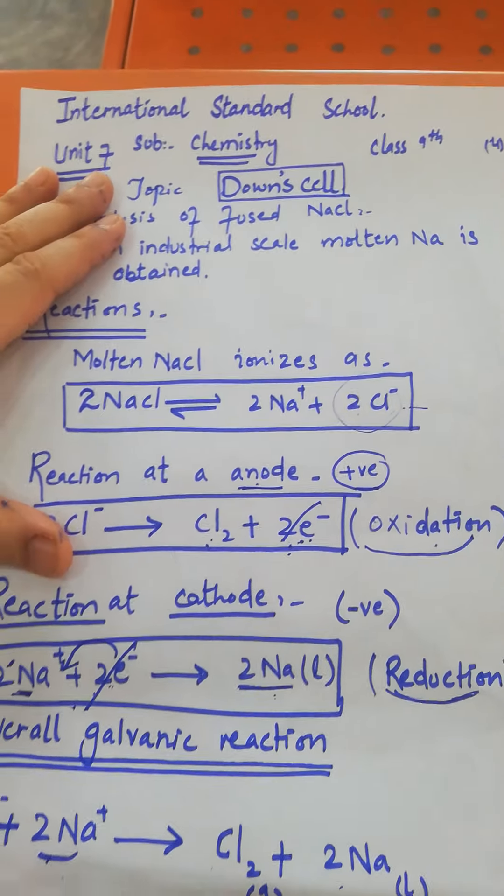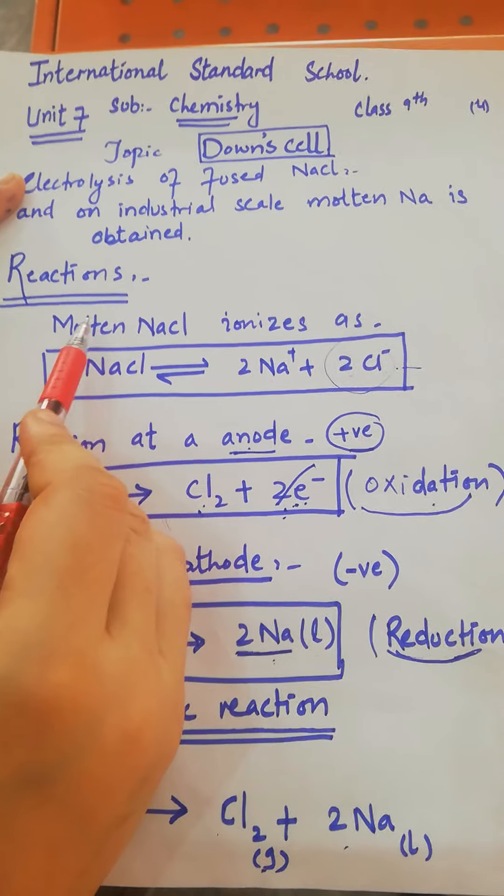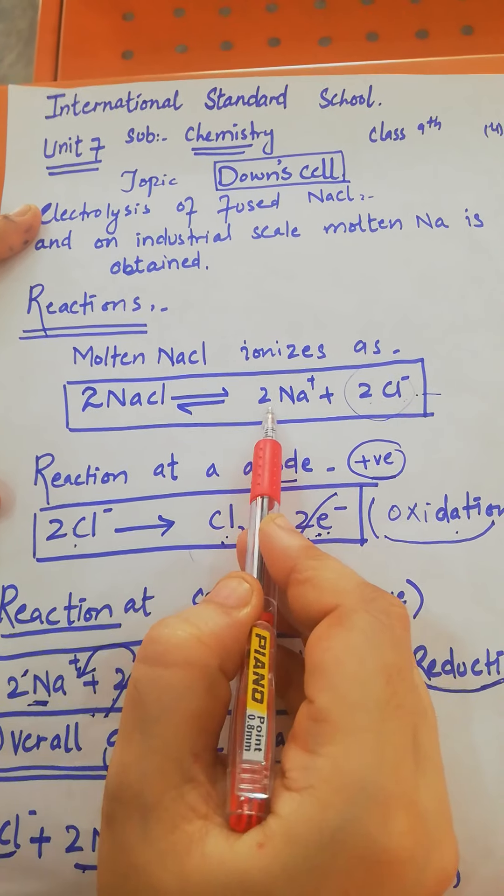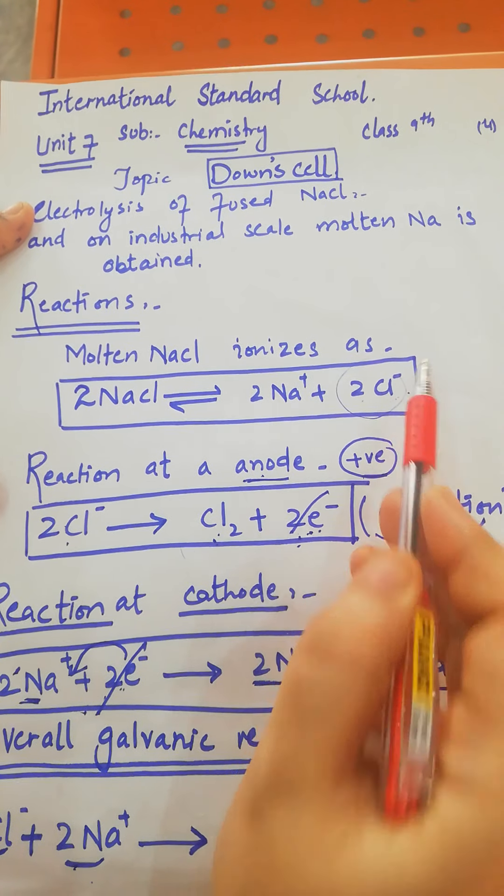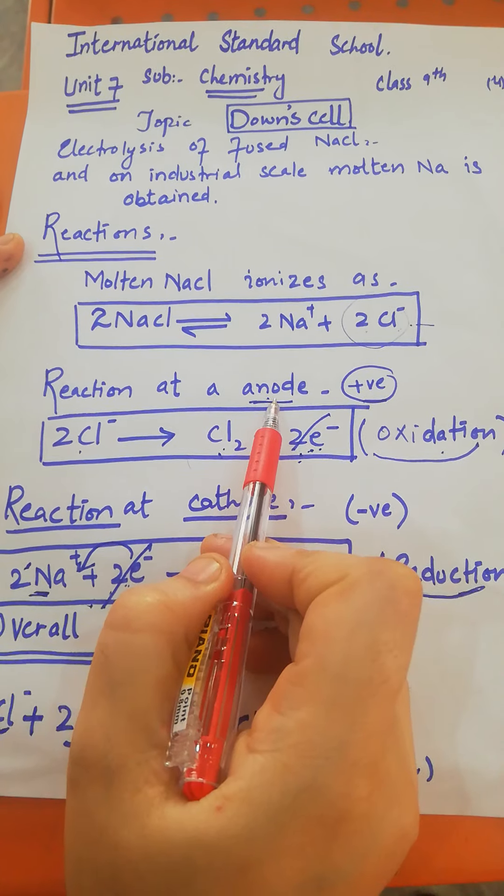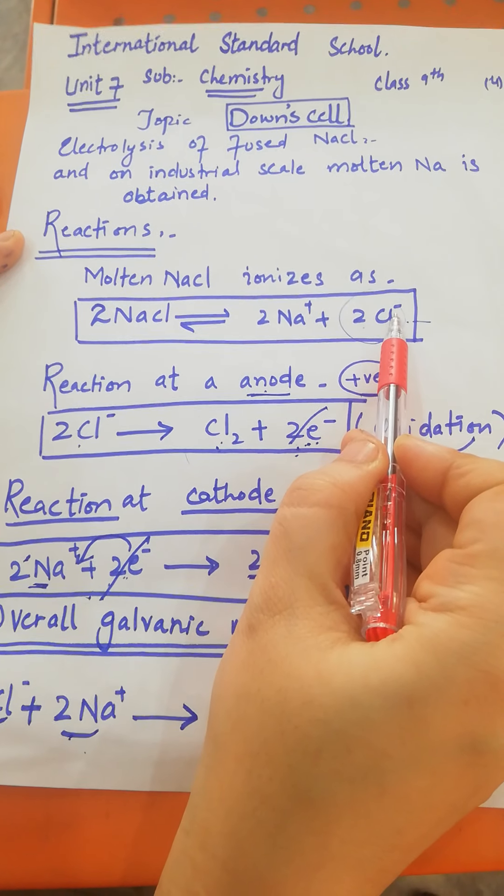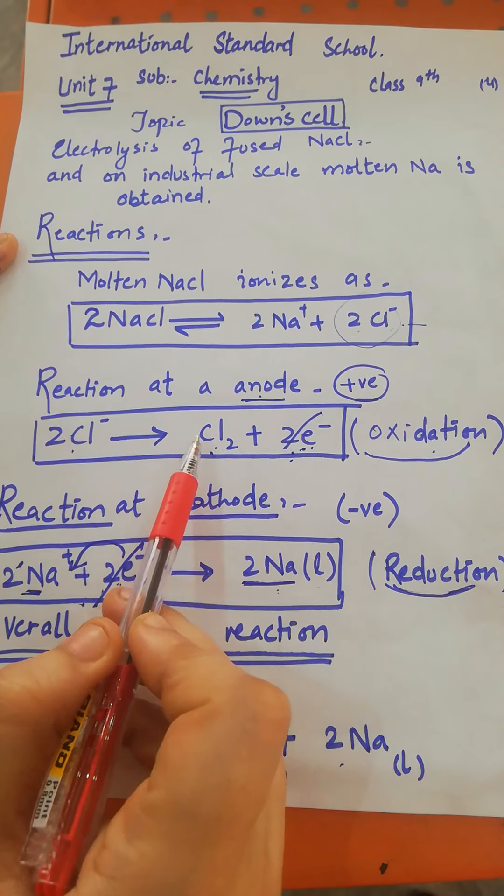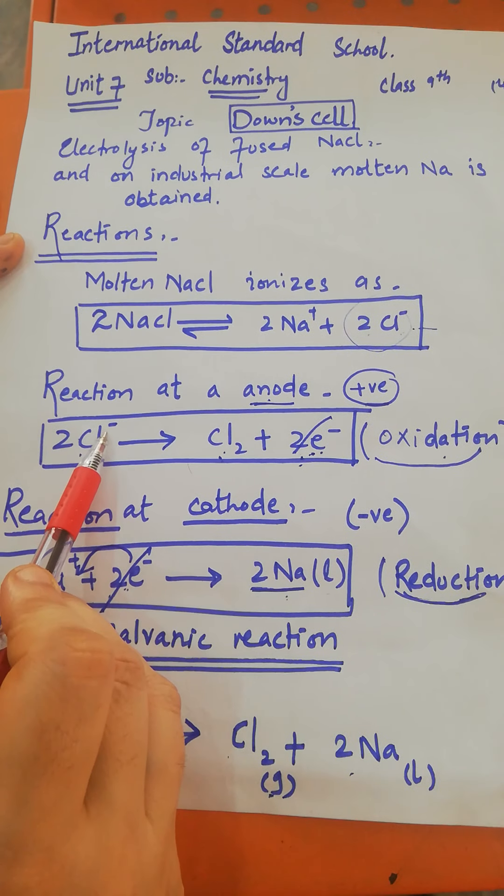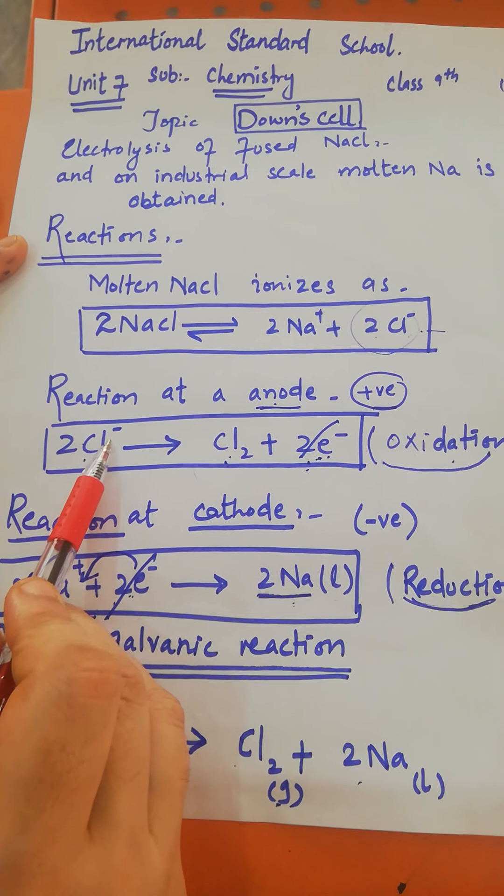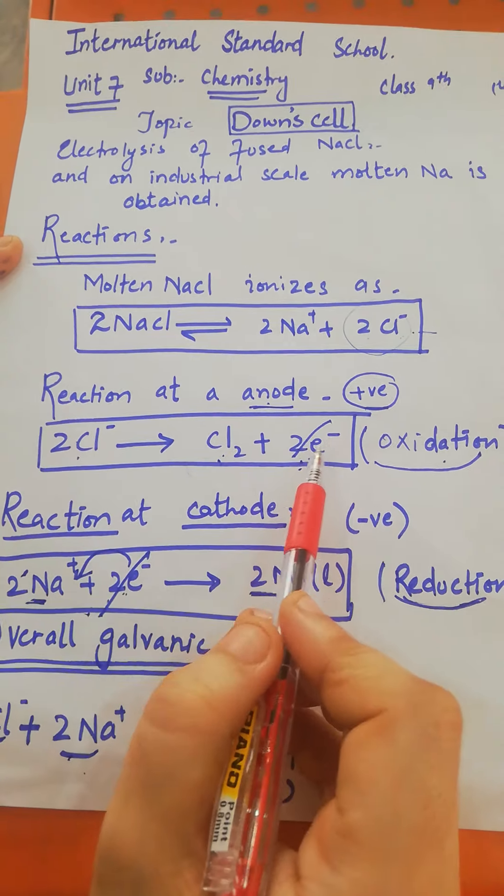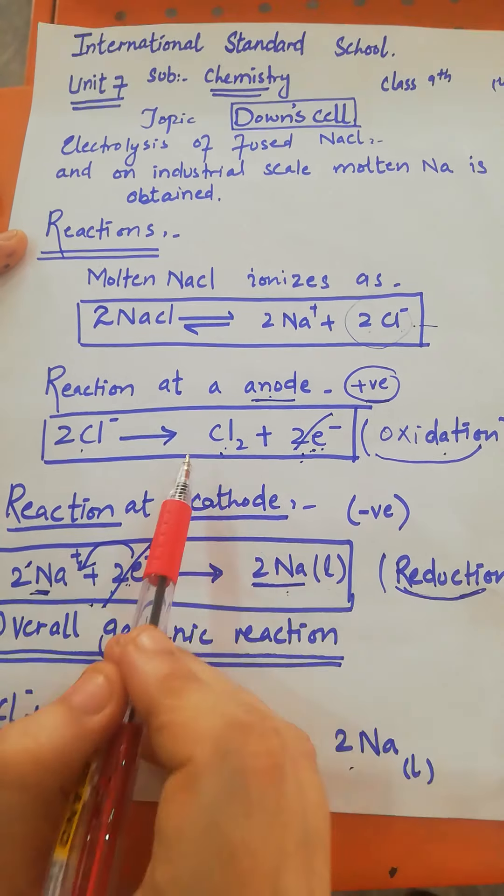Here you can see the reactions. Molten sodium chloride ionizes as sodium ion (Na+) and chloride ion (Cl-). At the anode, chloride ions, which have negative charge, move towards the anode where they discharge and undergo oxidation.